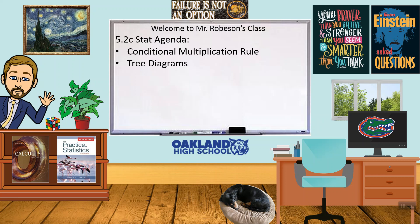Hi guys, it's Mr. Robeson here again. This is the end of 5.2, so we're looking at the conditional multiplication rule, and we're going to look at something called tree diagrams.